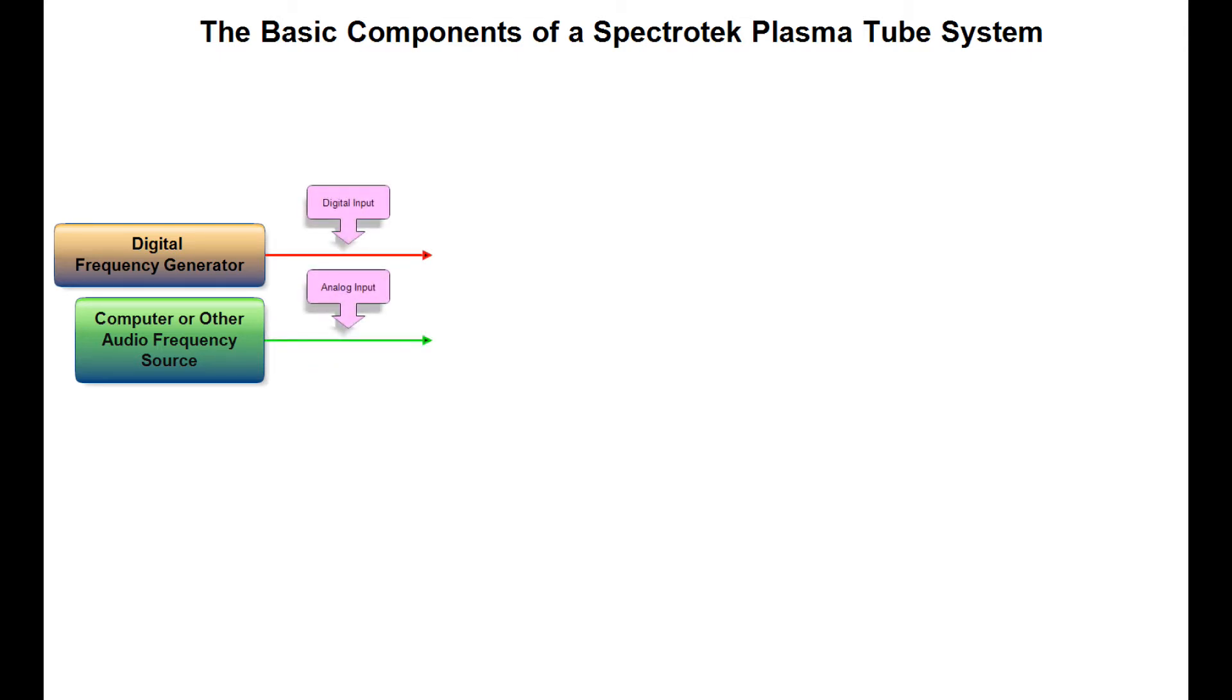The digital or audio frequencies are sent to the two inputs of the amplifier through shielded cables. The amplifier inputs are marked A for the audio and B for the digital.